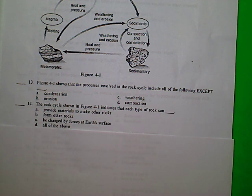14. The rock cycle shown in Figure 4-1 indicates that each type of rock can A. Provide materials to make other rocks. B. Form other rocks. C. Be changed by forces at Earth's surface. D. All of the above.